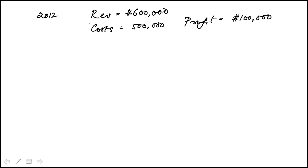Now they tell us that the following year, the company's revenue increased by 5%. So 5% of $600,000, that's going to be $30,000.